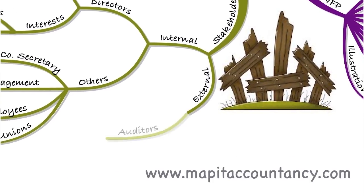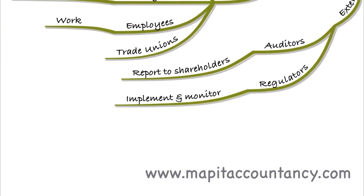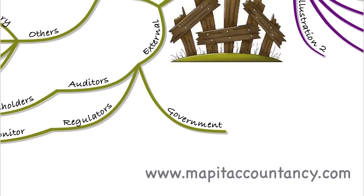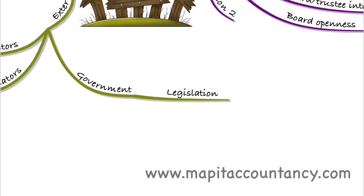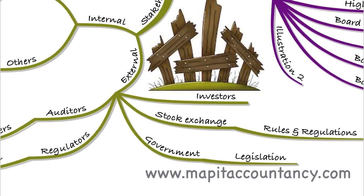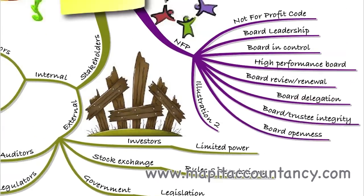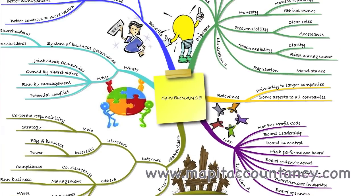External stakeholders include auditors, who report to the shareholders; regulators, who implement and monitor the regulations applying to that industry or business; government, which wants legislation to be upheld; and the stock exchange, which wants its rules and regulations to be abided by. Lastly, investors are key stakeholders — they will have limited power, but we need to make sure to take them into account. This was really an introductory lecture covering all the things we're going to look at throughout these modules, which we'll then go on to examine in detail.